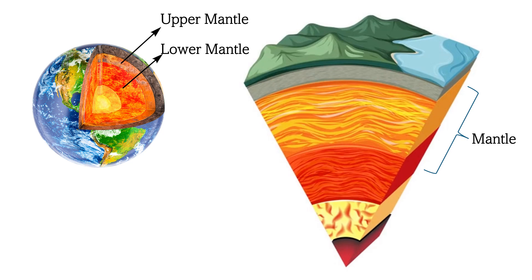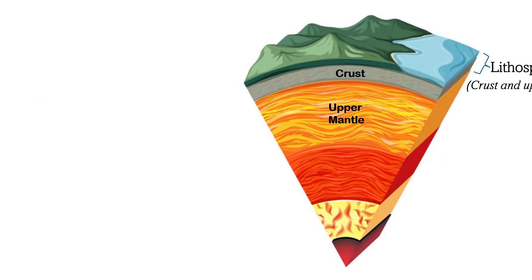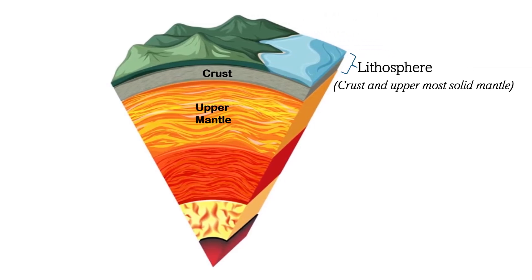The Earth's mantle is divided into two main parts based on depth and physical properties: the upper mantle and the lower mantle. The upper mantle lies just below the crust and extends to a depth of about 660 kilometers. It is involved in the movement of the Earth's large rigid lithospheric plates that make up the surface. The lithosphere is the outermost solid, rigid shell that includes the Earth's crust and the very top part of the upper mantle. Inside the upper mantle, there are convection currents — slow-moving circular flows of hot and cold rock.